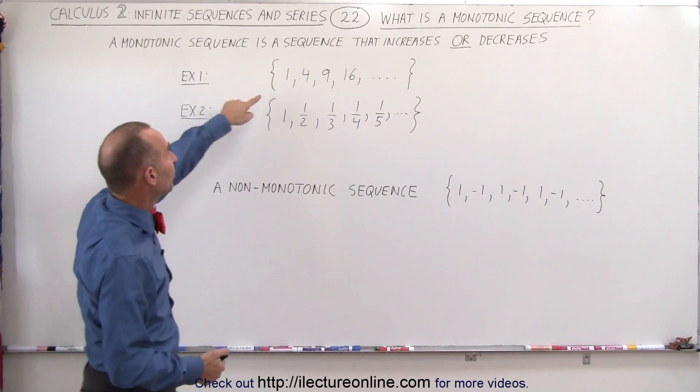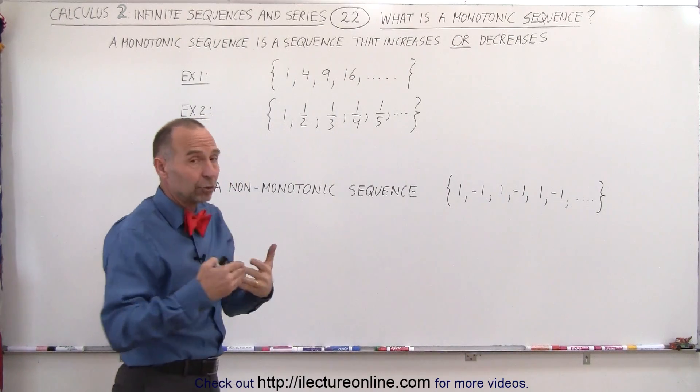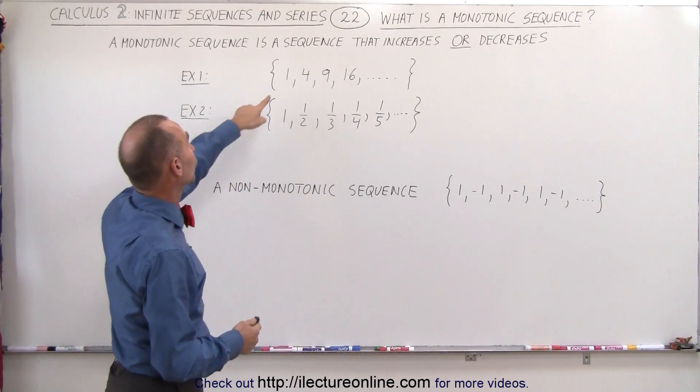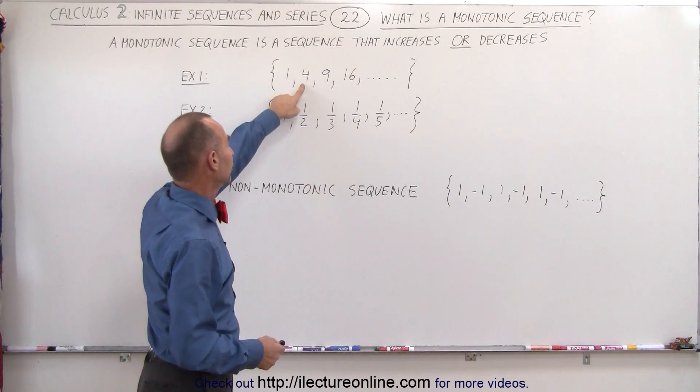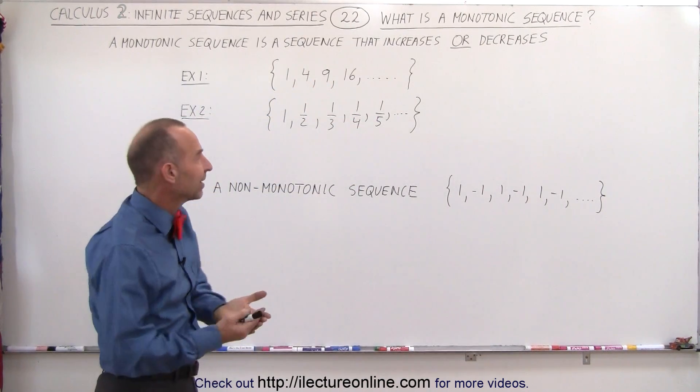Here we have an example of an increasing sequence: 1, 4, 9, 16, which when you look at it a little bit more closely you realize that this is the square of 1, the square of 2, the square of 3, the square of 4, and so forth. So you can see that that sequence increases.